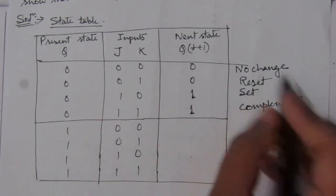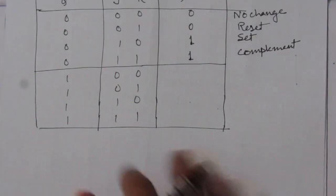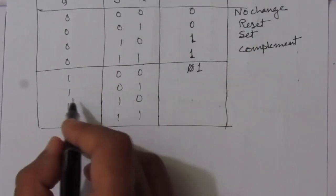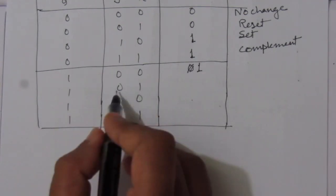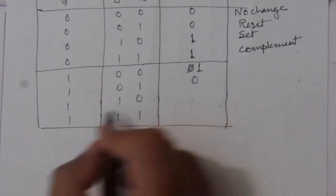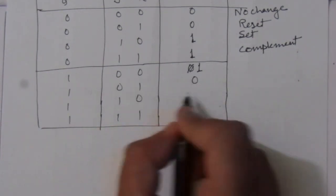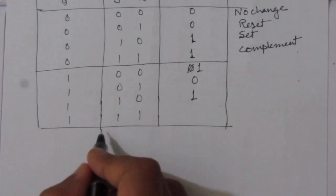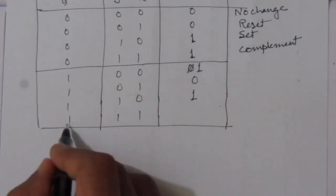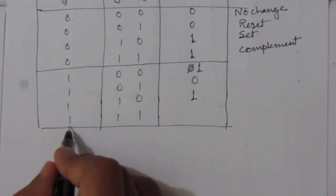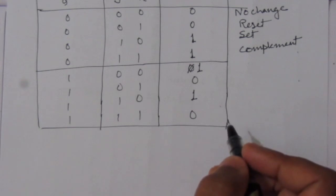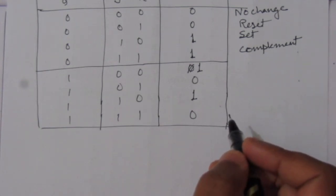This is set and this is complement. We follow the same process for present state one: for zero-zero we have no change so we'll have one; for zero-one we have reset so we write zero; for one-zero it is set so we'll have one; and for one-one we have complement, so we write zero.